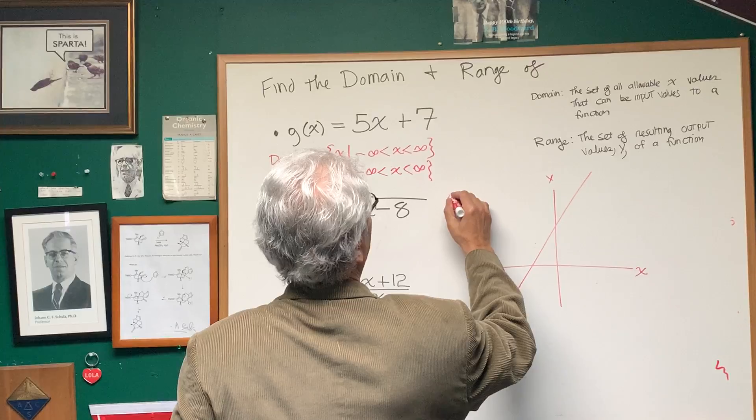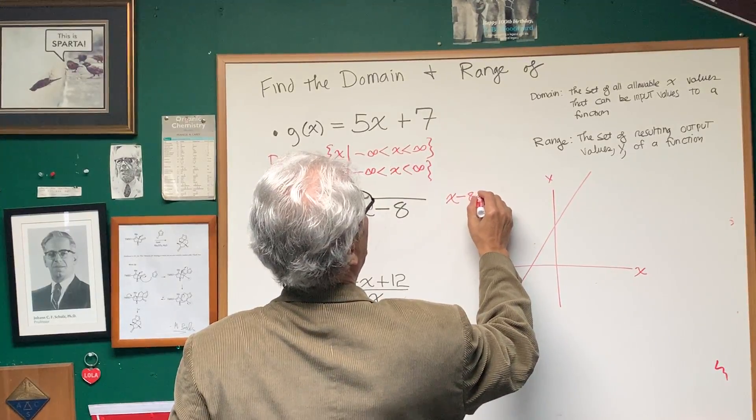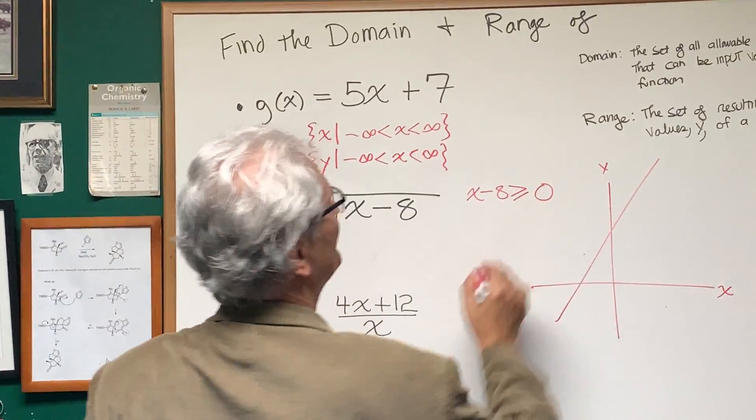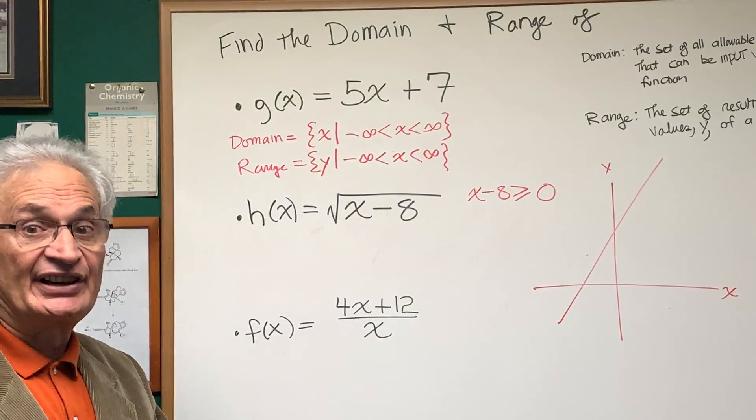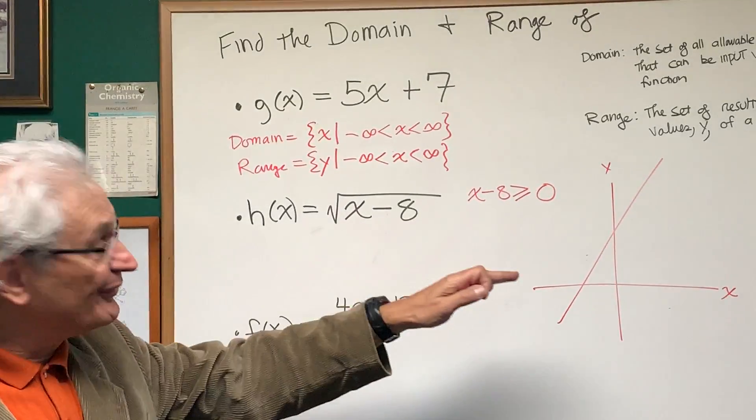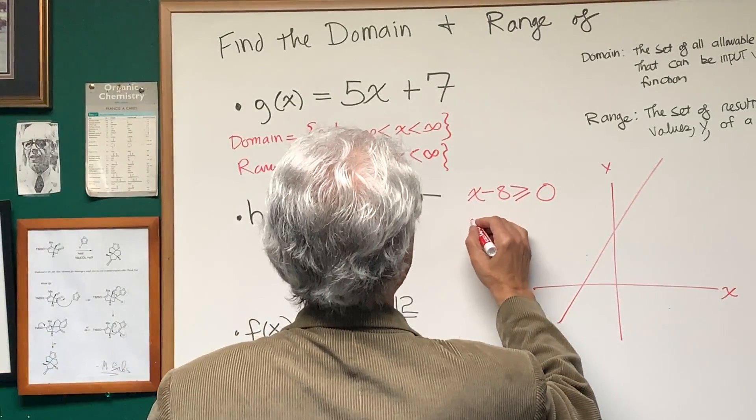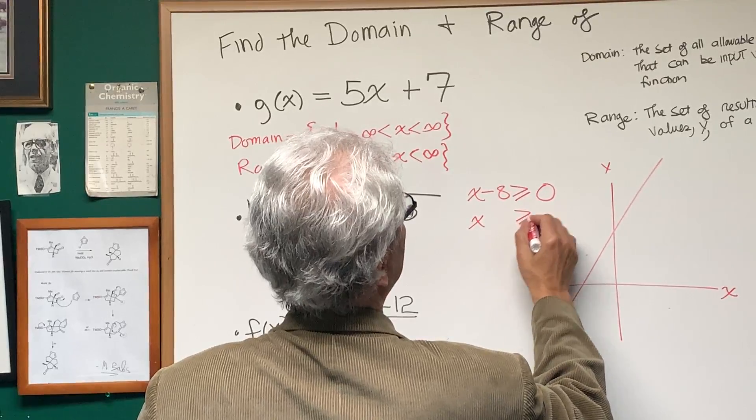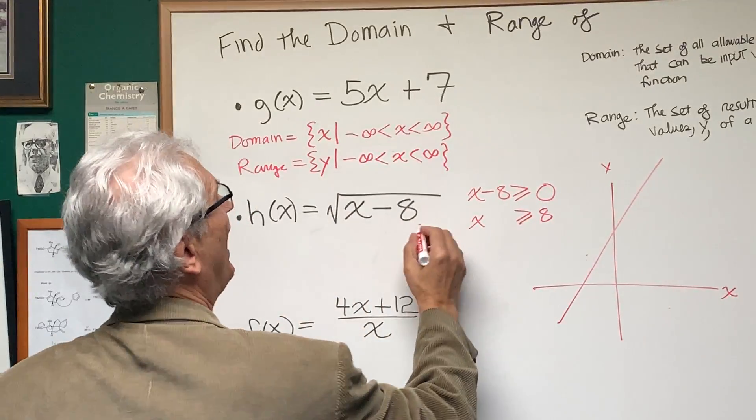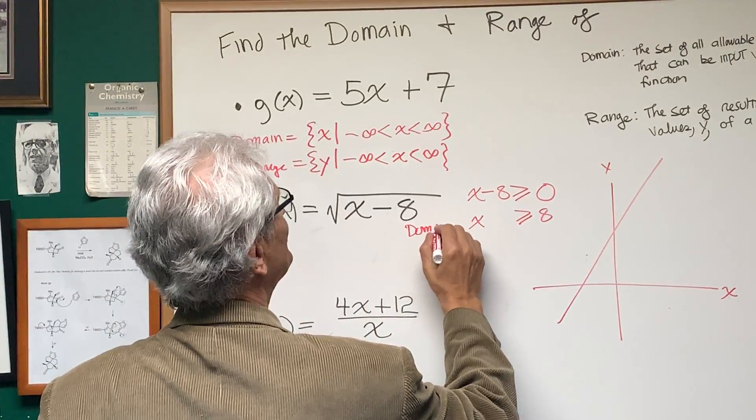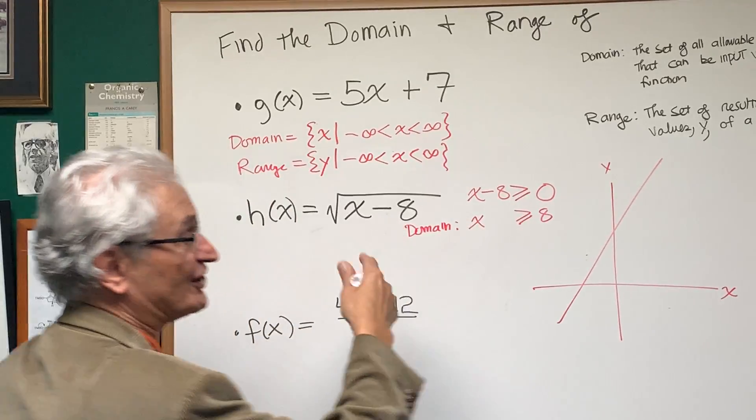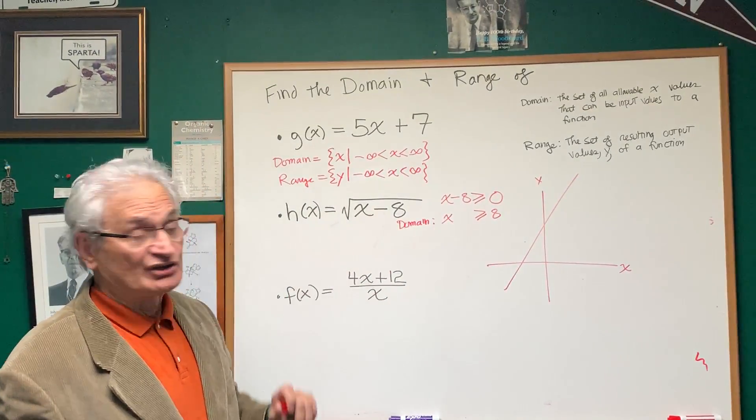So x minus 8 has to be non-negative. So we're going to write that like this: x minus 8 has to be greater than or equal to 0. And if we want explicitly a particular set of x values, we're going to solve for x. Adding 8 to both sides, x is greater than or equal to 8. And there is our domain. x is greater than or equal to 8, that's the domain of this function.